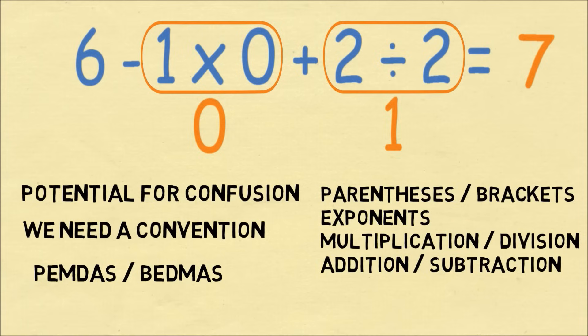On old calculators, it will just evaluate it from left to right, and that could end up with the wrong answer. So you always want to be careful and follow the order of operations.